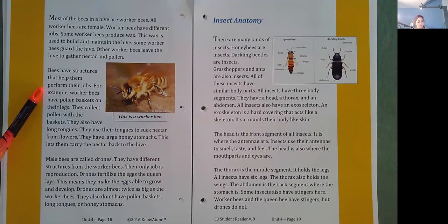Bees have structures that help them perform their jobs. For example, worker bees have pollen baskets on their legs. They collect pollen with the baskets. They also have long tongues. They use their tongues to suck nectar from flowers. They have large honey stomachs. This lets them carry the nectar back to the hive.